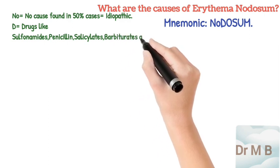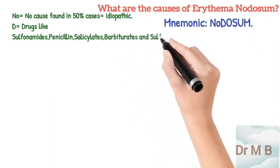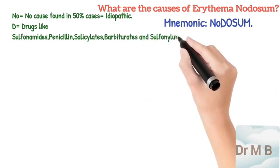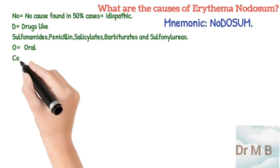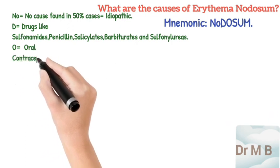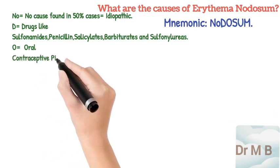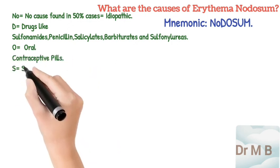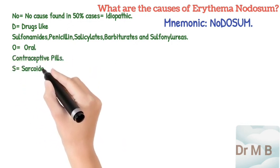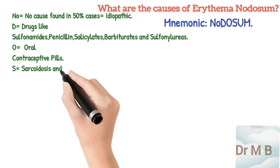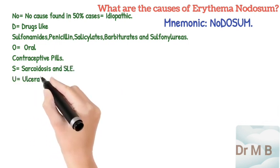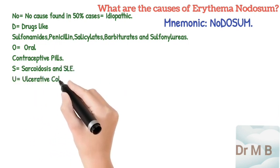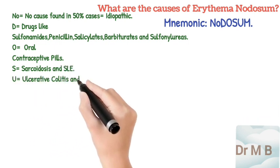D stands for drugs like sulfonamides, penicillin, salicylates, barbiturates, and sulfonylureas. O stands for oral contraceptive pills in females.